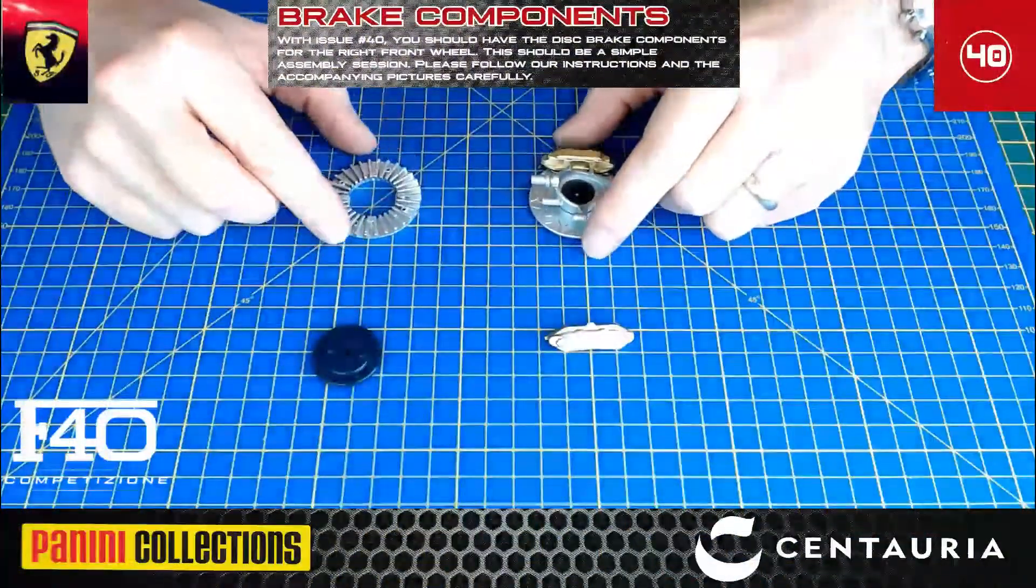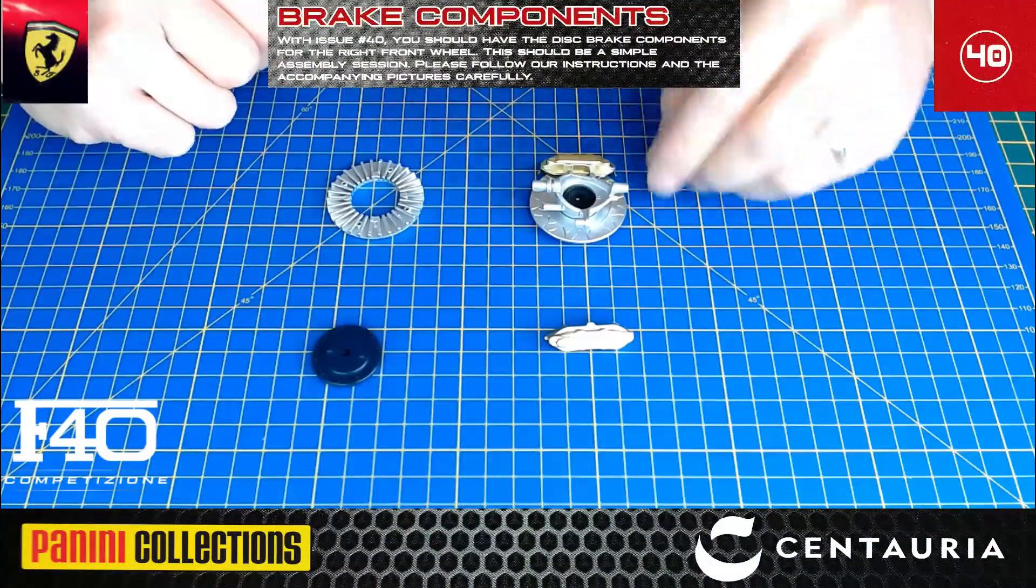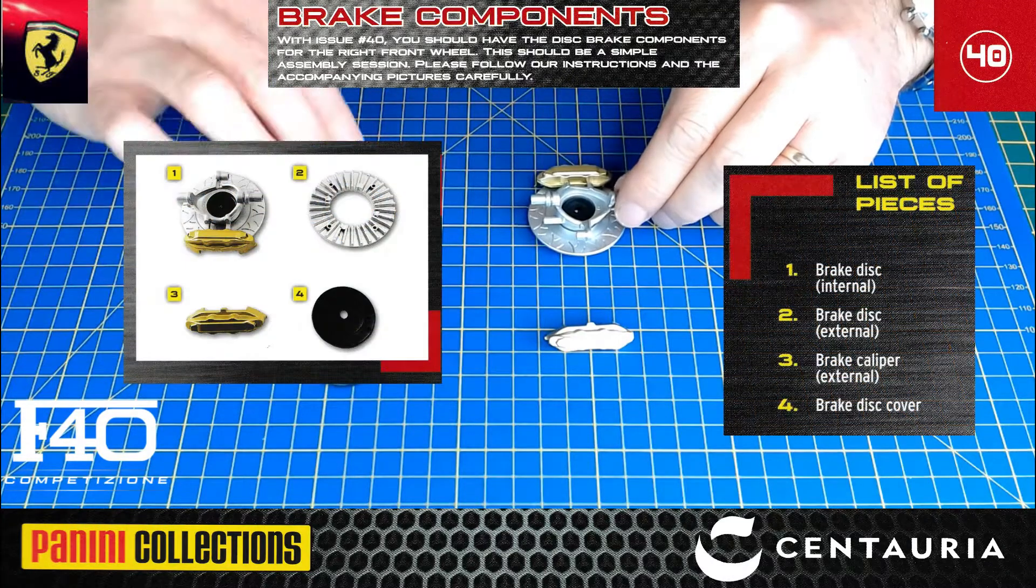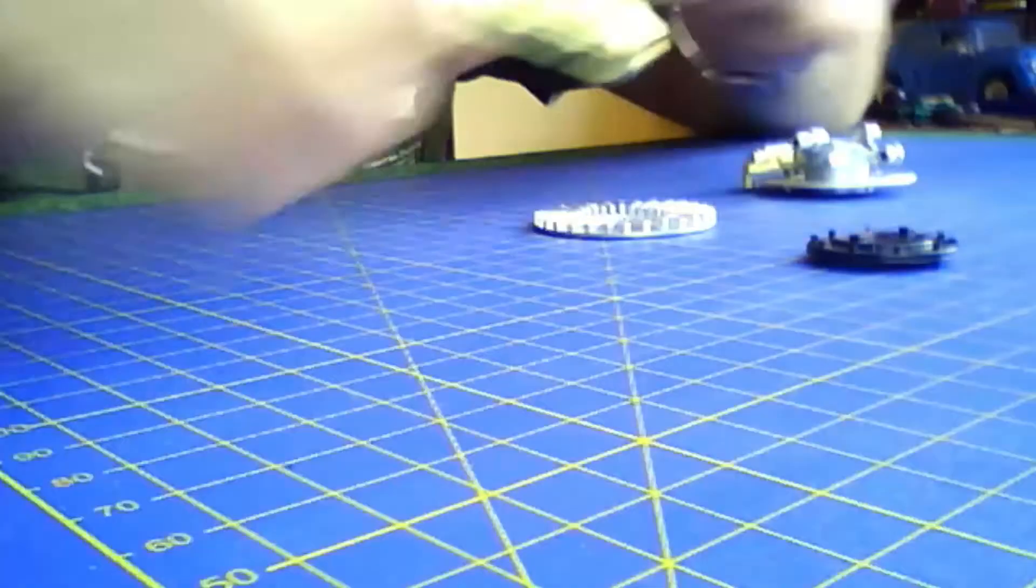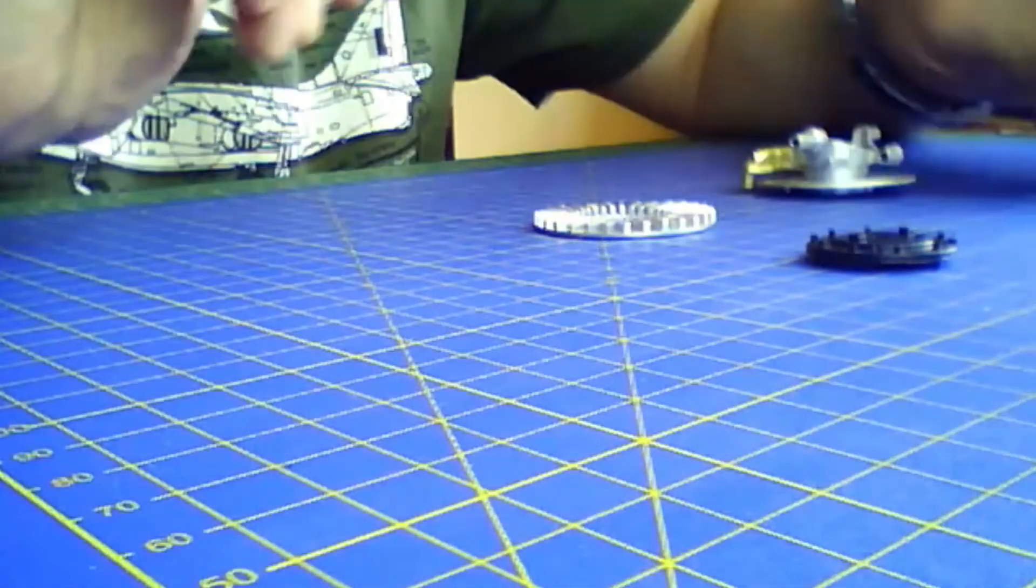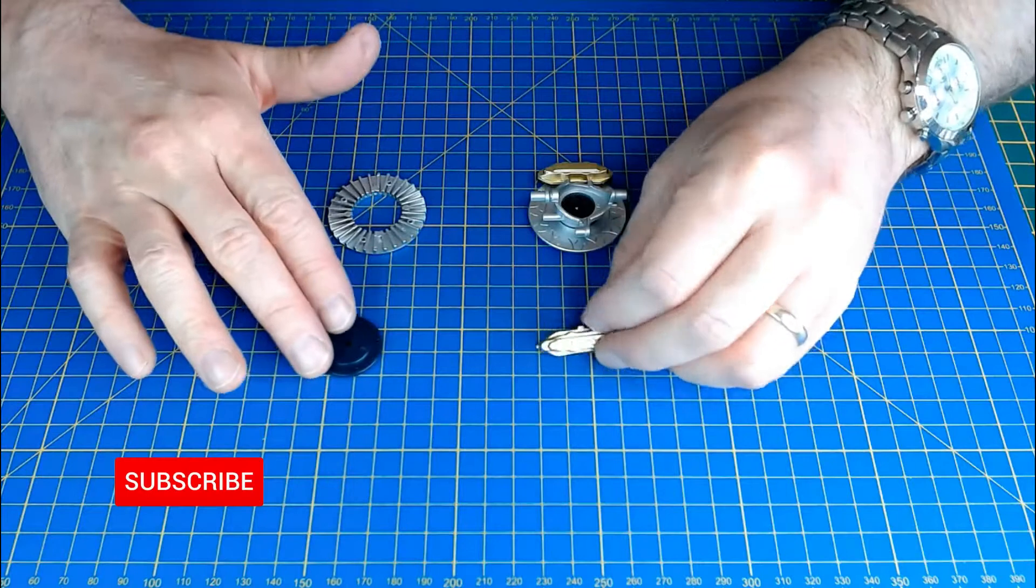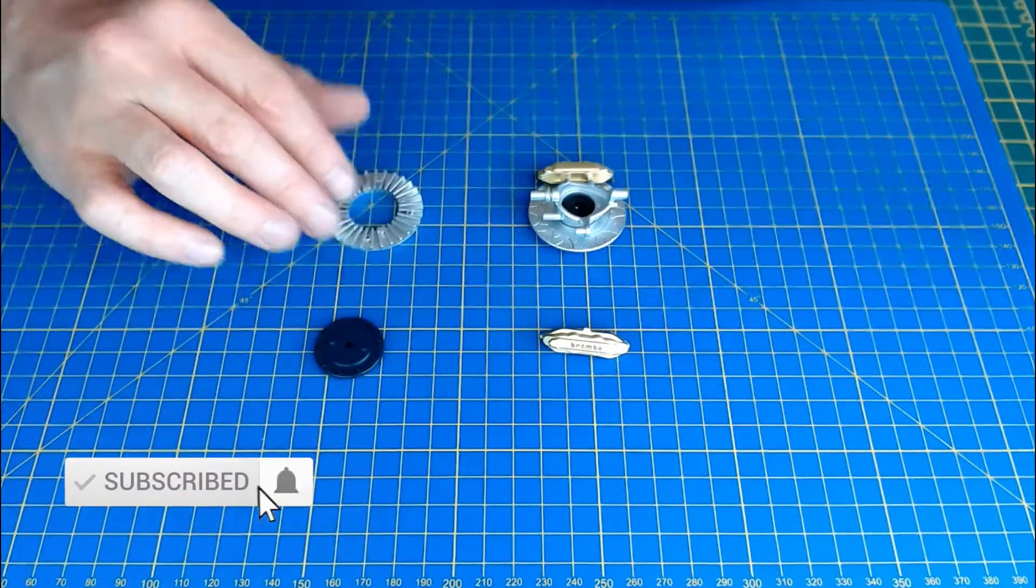Okay, just a few parts laid out here for Issue 40. It's the brake caliper and brake disc, quite nicely detailed though. Brembo written on it, the calipers. Not much in this one, might be a bit of a relief actually. Just get this assembled.